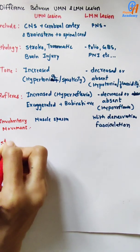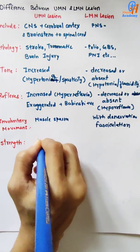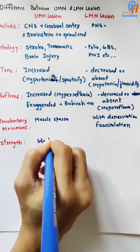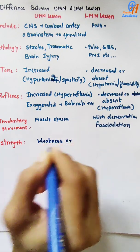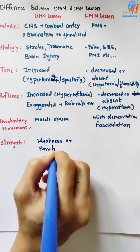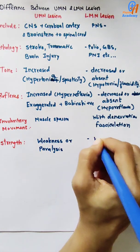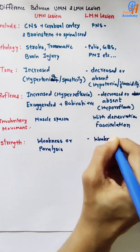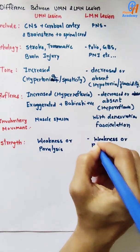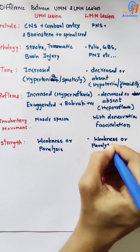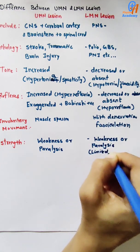Regarding strength: in UMN lesion, weakness or paralysis is seen. In lower motor neuron lesion, there is also weakness or paralysis, but in a limited distribution — segmental or focal.